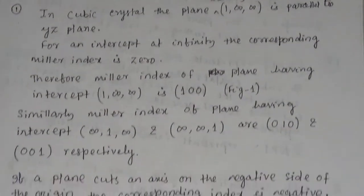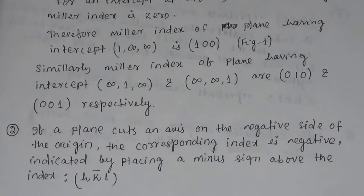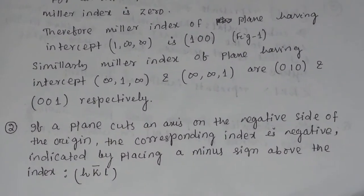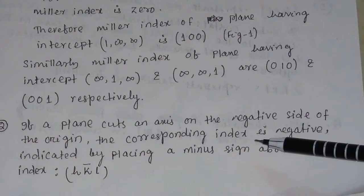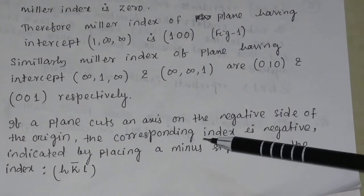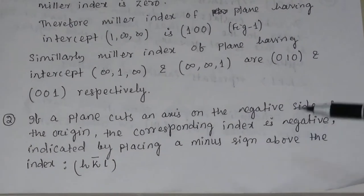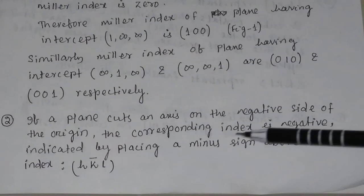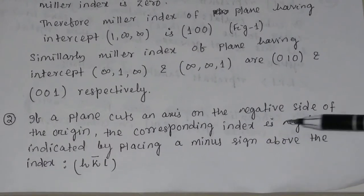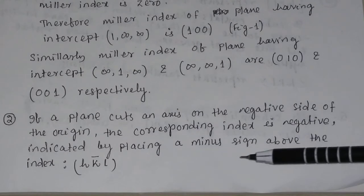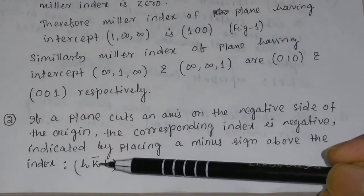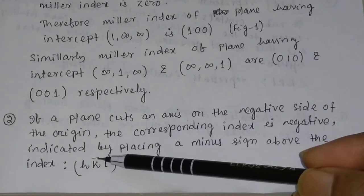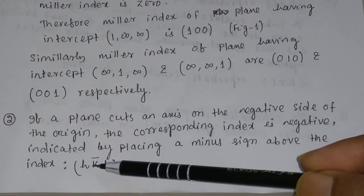Now, if the plane cuts the axis on the negative side of the origin, the corresponding Miller index will be negative. It is indicated by placing a minus sign above the index — a bar notation. If K is negative, you put a bar over K, so it will be written as H, K-bar, L.